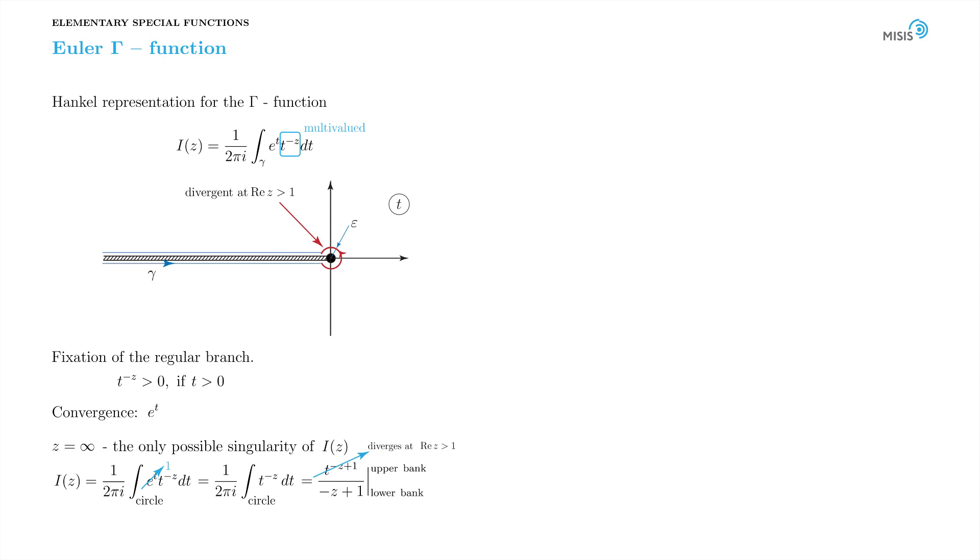So the thing diverges when real part of z is greater than 1. But we know that the function i is regular at any finite z. This superfluous divergency comes from the deformation of the contour, which shrinks it to the vicinity of a branch point. And the answer shouldn't depend on the contour deformation.